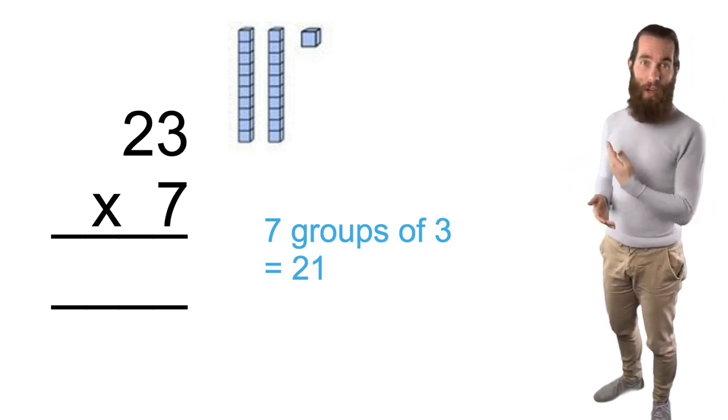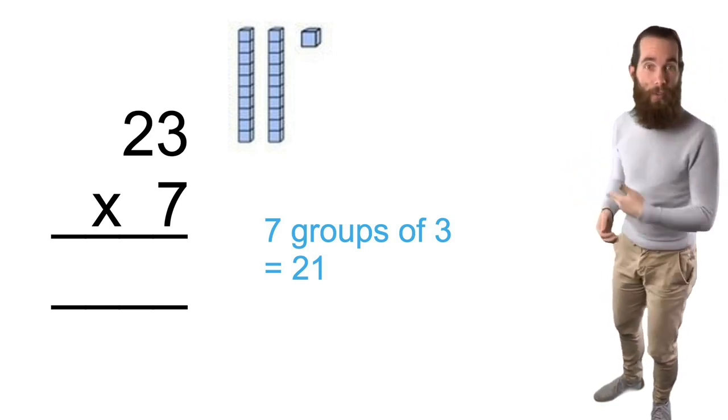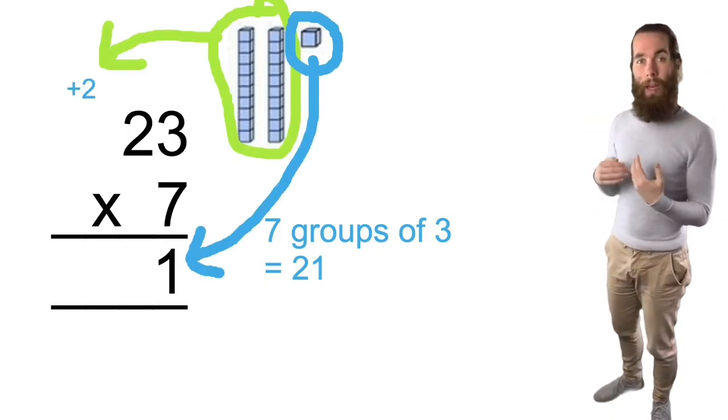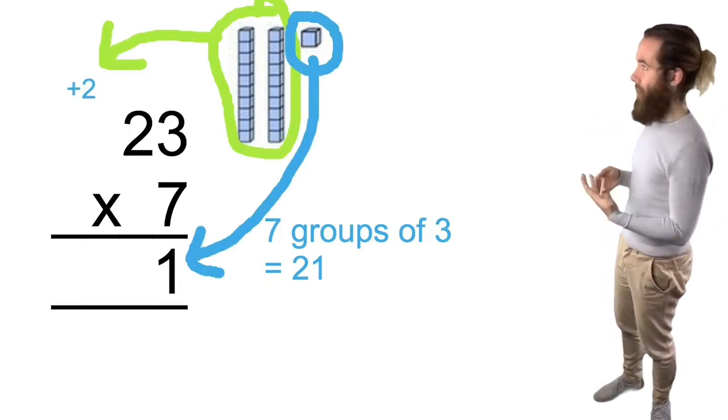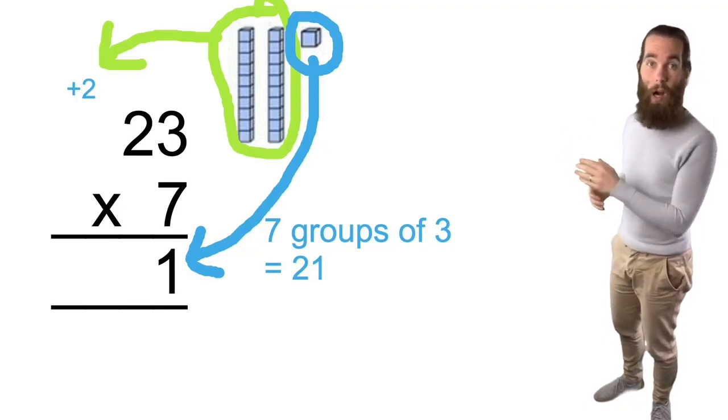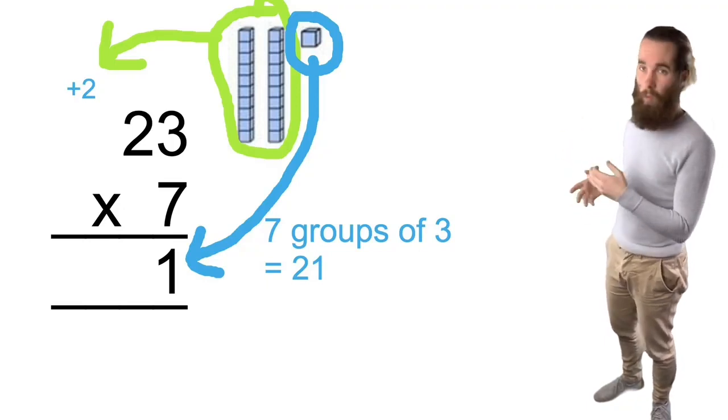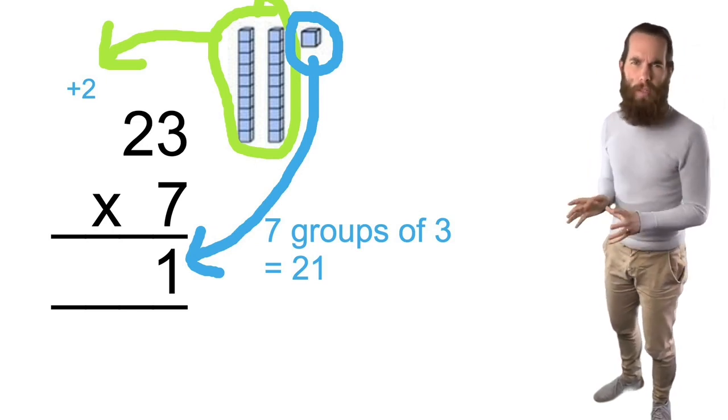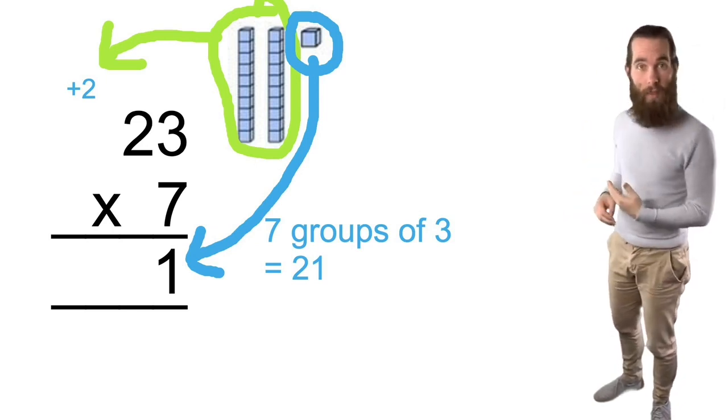What am I going to write down? Well I've only got one unit and that's what I'm going to write down in my units column. So I'm going to write down that one and then I'm going to carry those two tens over to the tens column. I'm going to add a little plus sign there so that I know that I'm going to add them once I finish multiplying whatever number is in the tens column.